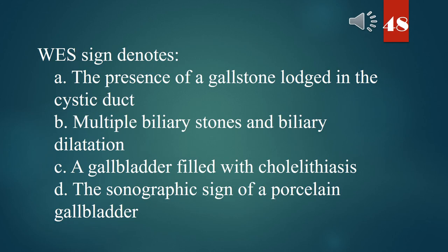WES sign denotes: A. The presence of a gallstone lodged in the cystic duct. B. Multiple biliary stones and biliary dilatation. C. A gallbladder filled with cholecystitis. D. The sonographic sign of a porcelain gallbladder. The answer is C. A gallbladder filled with cholecystitis.